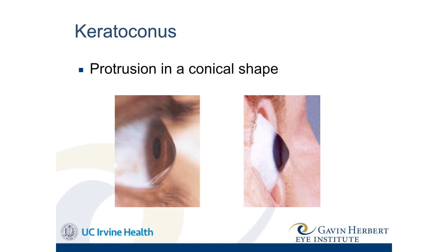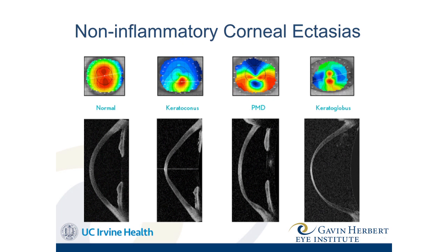Here you can see protrusion that takes on a conical shape. Typically the cone is just below the midline. There are other similar conditions: on the left we have normal, then keratoconus where the steep red area is more underneath, with thinning and protrusion occurring at the same place. With pellucid marginal degeneration, the topography shows a crab claw sign and the protrusion is slightly above the thinnest area. Then keratoglobus, a condition people are born with, where the entire cornea — not just one portion — is extremely thin.